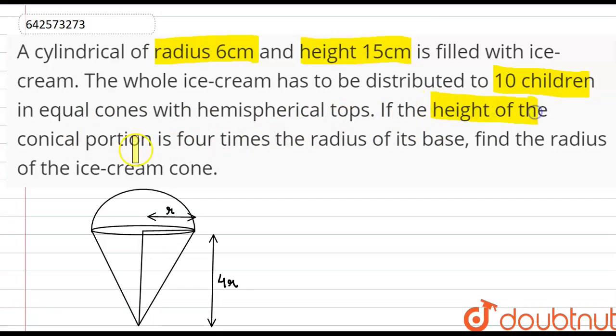We are given that the height of the conical portion is 4 times the radius of its base. So we have to find the radius of the ice cream cone.